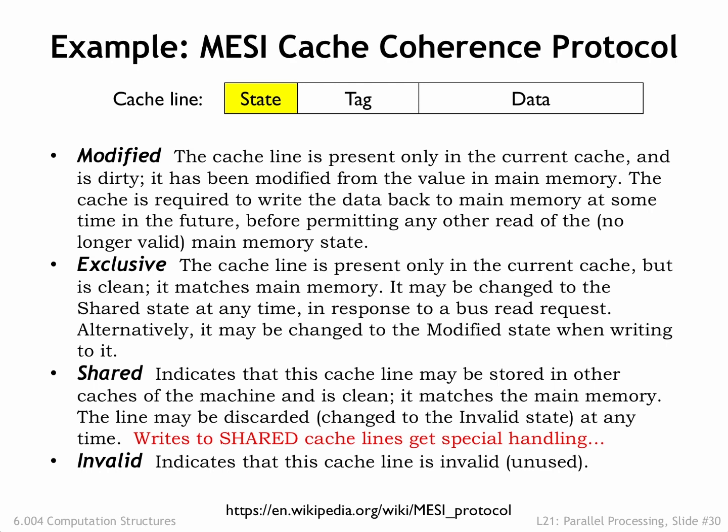If another cache has a modified copy of the cache line, it supplies the changed data, providing the correct values for the requesting cache as well as updating the values in main memory. The shared signal is asserted and both the reading and responding cache will set the state for that cache line to shared. At the end of the read request, if there are multiple copies of the cache line, they will all be in the shared state. If there's only one copy of the cache line, it will be in the exclusive state.